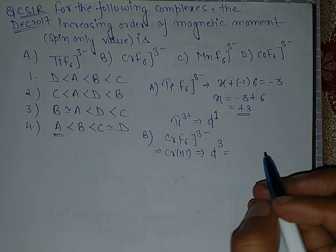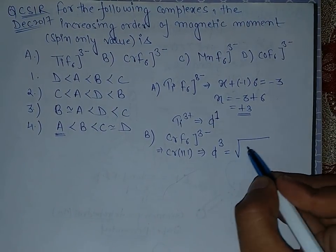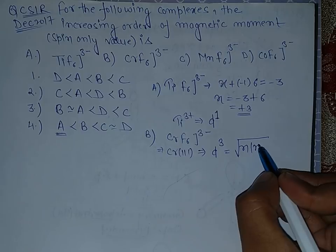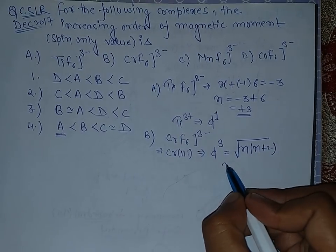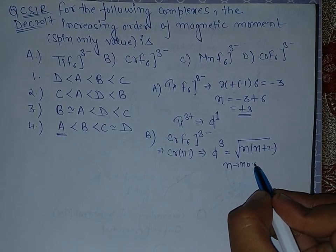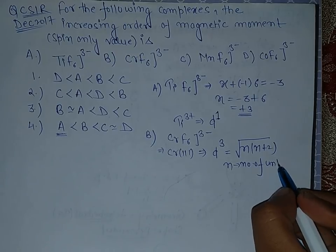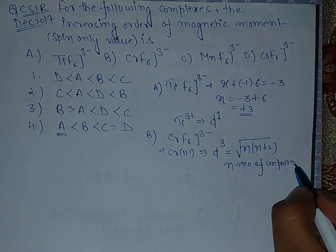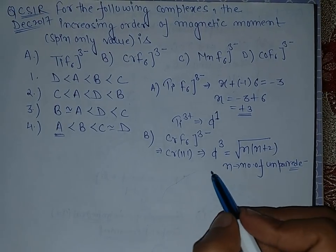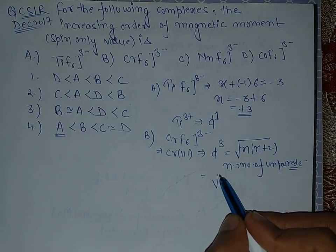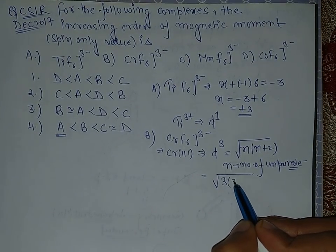The second is having three electrons. By the way, the spin-only magnetic moment is given by √(n(n+2)), where n is the number of unpaired electrons.